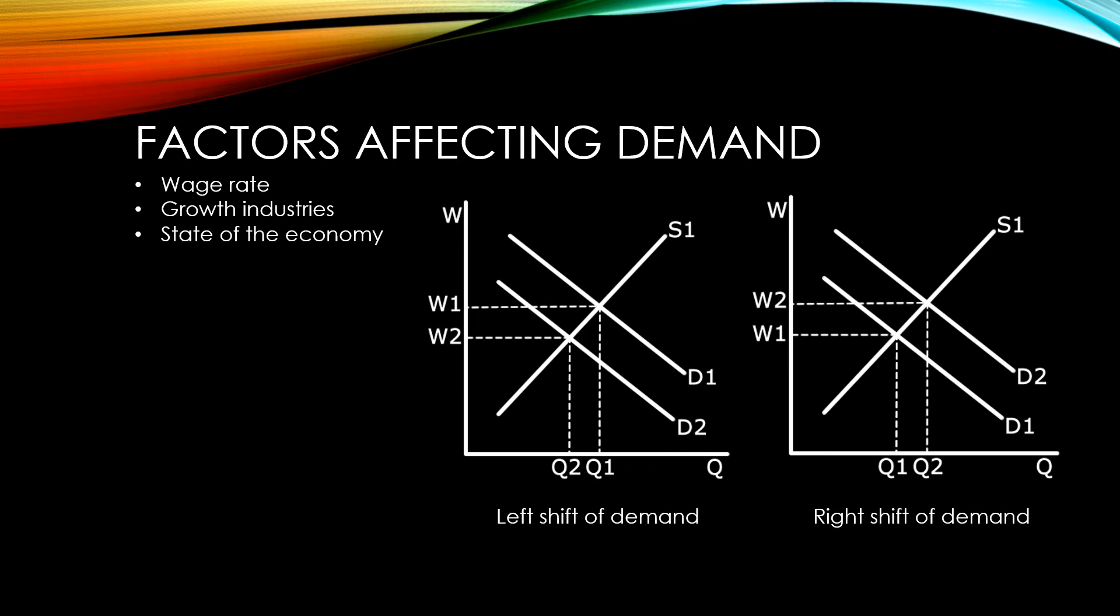When wages rise at a slower rate than inflation, there is a fall in real wages. This means in real terms, the efficiency of using labour has gone up and there will be a right shift of demand for labour. When the labour force is better educated and therefore more productive, it is more efficient to use labour. Therefore, there will be a right shift of demand for labour.